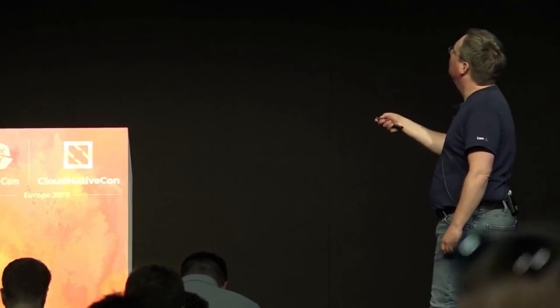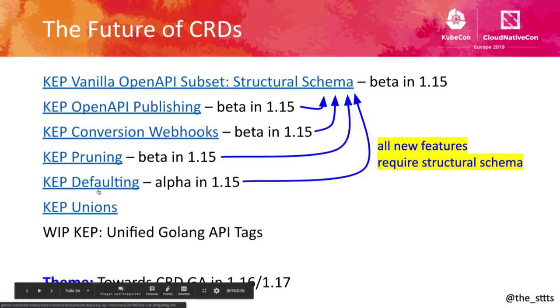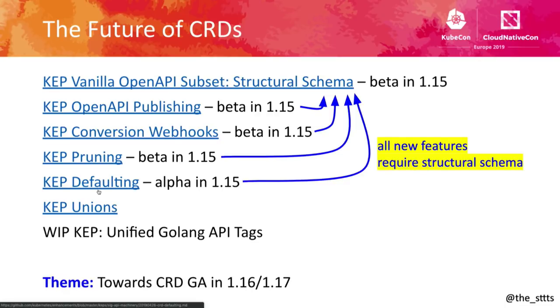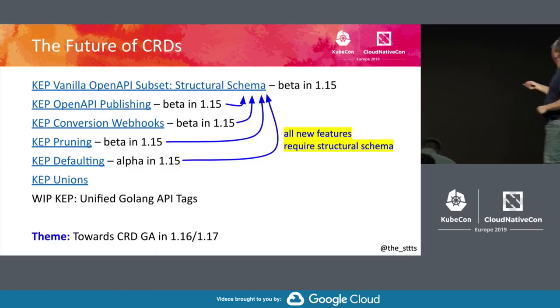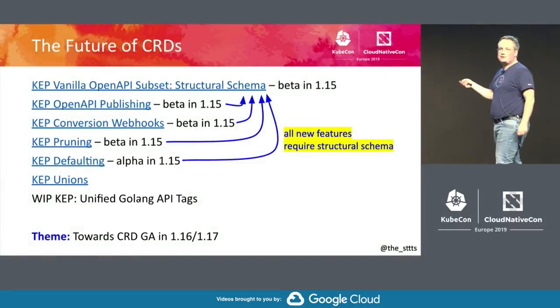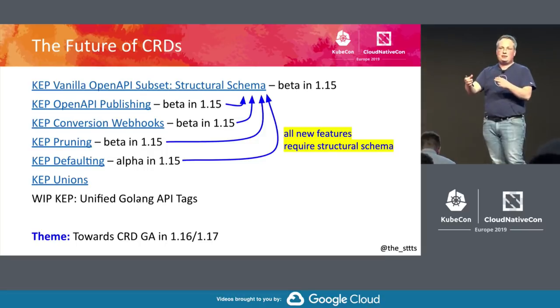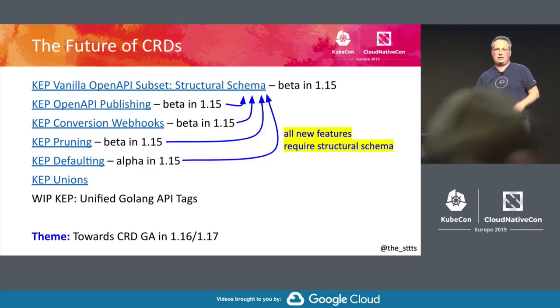Q: How does this initiative reflect on native Kubernetes types — the ones that are not CRDs? A: Pruning we have forever — it's an artifact of Golang unmarshalling by the JSON decoder. Unions is a thing for native types as well; there is work being done to make that more natural with a discriminator field. And the unified Golang API tags — the idea is you can import a pod spec and the whole generation just works.